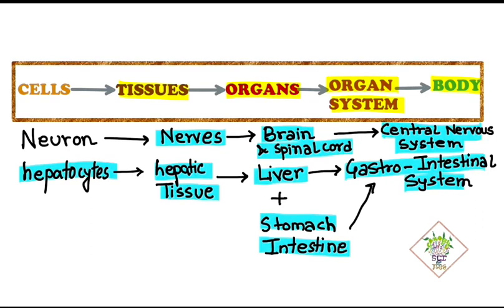So all these organ systems like central nervous system, gastrointestinal system, circulatory system, respiratory system work together to form a complete body. I hope now this flow chart is clear to you all.